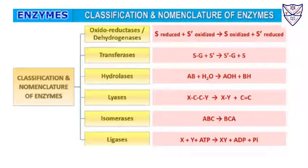If we want to classify enzymes based on what they do, we have oxidoreductases (or dehydrogenases), which do oxidation and reduction reactions; transferases, which transfer a group of substances; hydrolases; lyases; isomerases; and ligases. As you might have noticed, these enzyme names end with '-ase'.